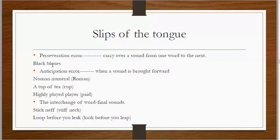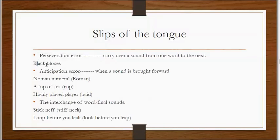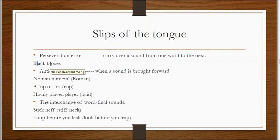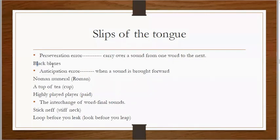For example, 'black blocks is' — the last sound of 'black' is carried over to the next word as well. The expression should have been 'black boxes,' but we carry over this last sound to the second word and make it 'blocks is.' This type of mistake, when we carry over a sound from one word to another, is called a perseveration error.